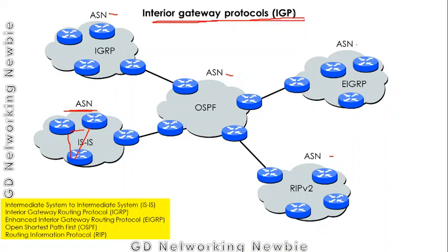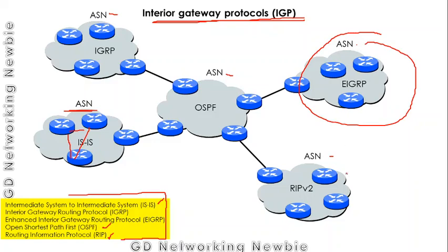Interior gateway protocols include: IS-IS (Intermediate System to Intermediate System), IGRP (Interior Gateway Routing Protocol), EIGRP (Enhanced IGRP), OSPF (Open Shortest Path First), and RIP (Routing Information Protocol). These are all interior gateway protocols used within a single autonomous system.